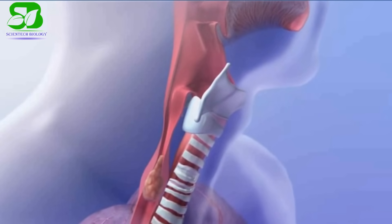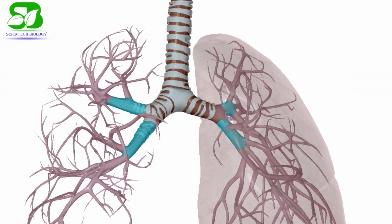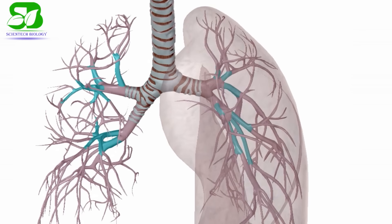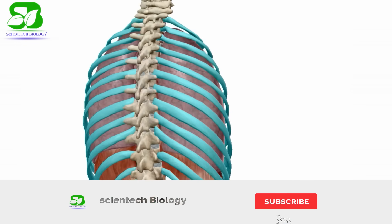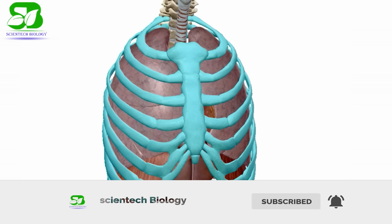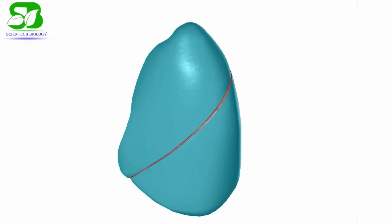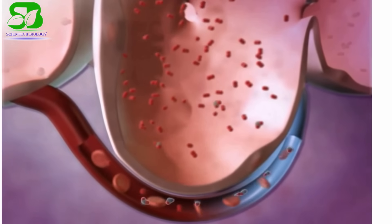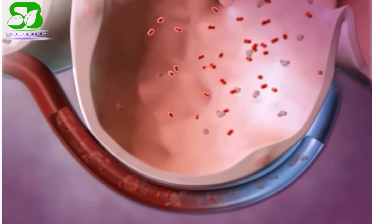The bronchi are the air passages into the lungs that begin at the end of the trachea. There are two bronchi, one for each lung. The bronchi divide and re-divide to form bronchioles. There are two lungs in the human body located inside the thoracic cage. The right lung is bigger than the left; the right lung has three lobes and the left has two. There are hundreds of millions of alveoli inside each lung — these are air sacs surrounded by a network of blood vessels that provide space for gaseous exchange.